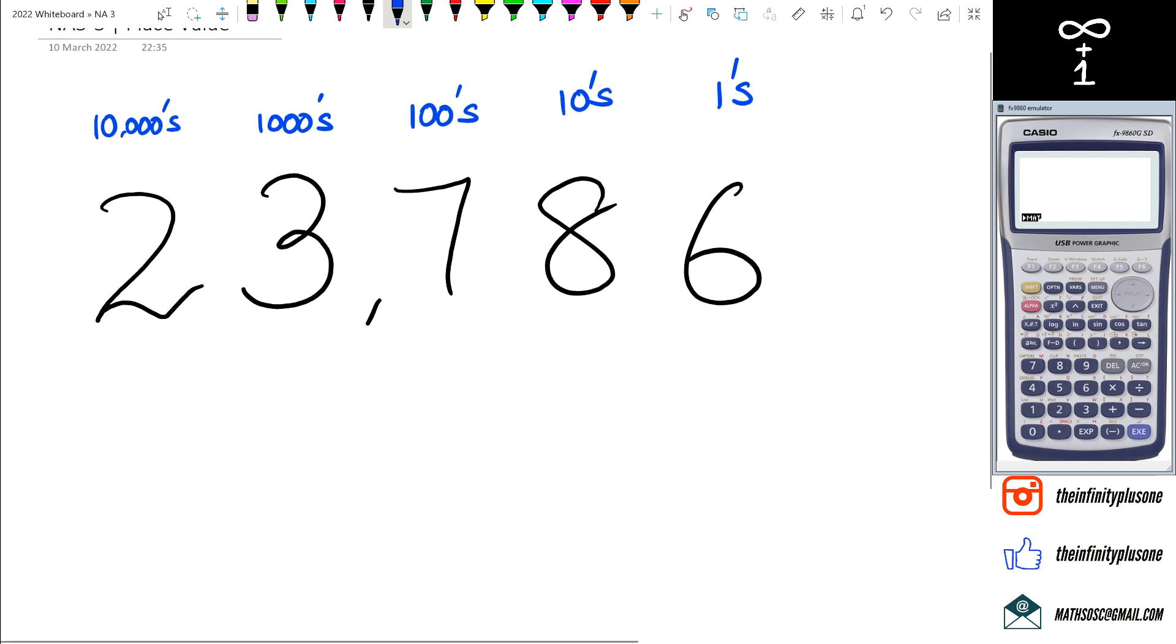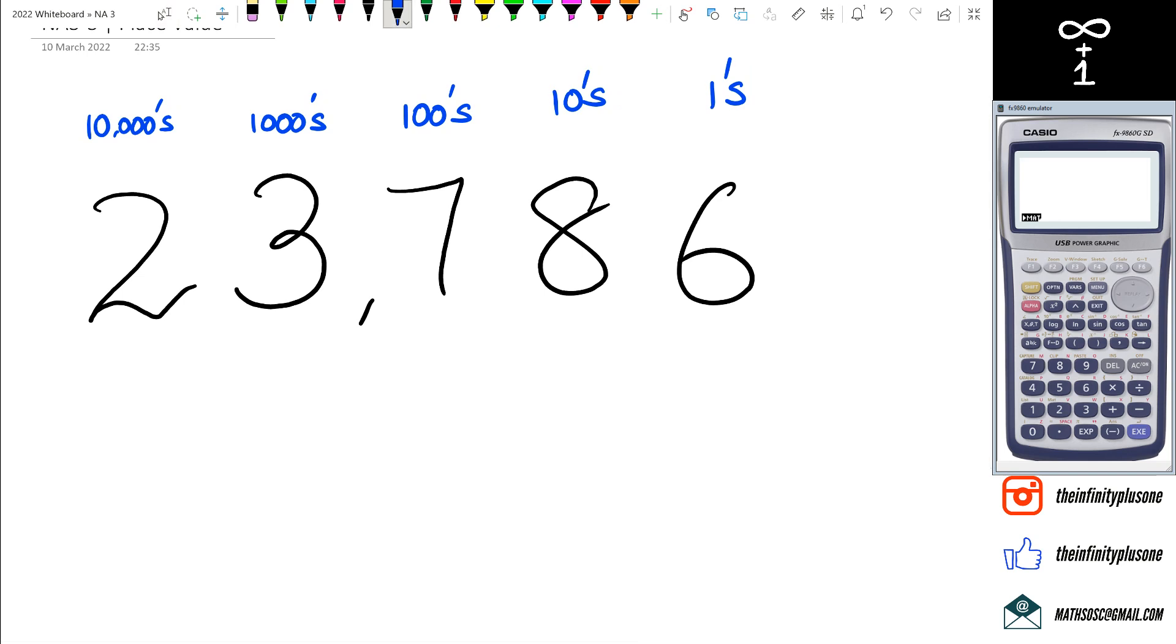So basically the idea is that if you were to break this down, you're going to end up with two lots of 10,000s, so we're going to write that as 2 × 10,000 plus three lots of thousands, so it's going to be 3 × 1,000 plus seven lots of 100, so that's 7 × 100.